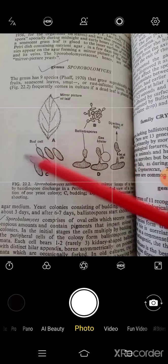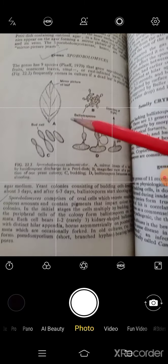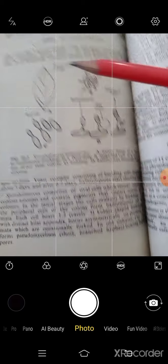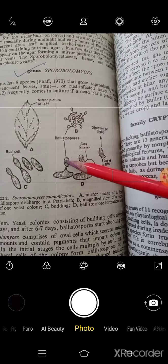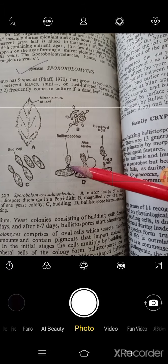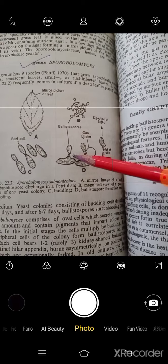And these bud cells, they will help in the asexual reproduction of sporobolomyces. Here you can see there are some blastospores. Now, what are blastospores?